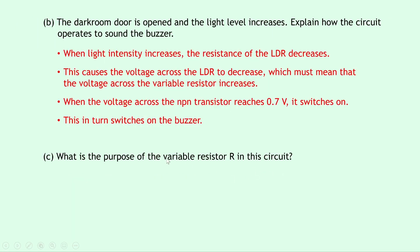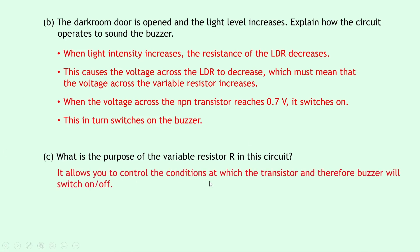Part C says what is the purpose of the variable resistor R in this circuit? A variable resistor allows you to change the resistance in a circuit and therefore the current. In switching circuits, variable resistors have an advantage over fixed resistors in that they allow you to control the conditions at which the transistor and therefore the buzzer will switch on or off. Here, that condition is the intensity of the light — so with a variable resistor, you can control the light level at which the transistor and the buzzer switch on or off.